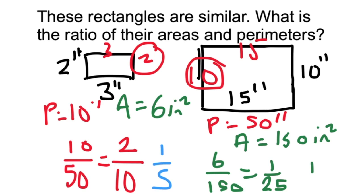So the ratio of the sides is 1/5 when we simplify it. And when you square 1/5, 1 squared is 1, 5 squared is 25.